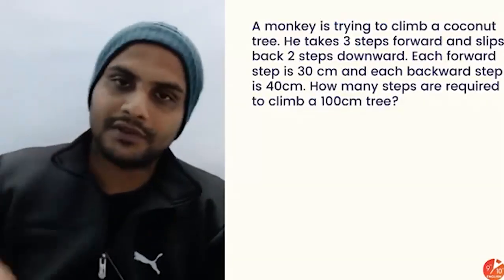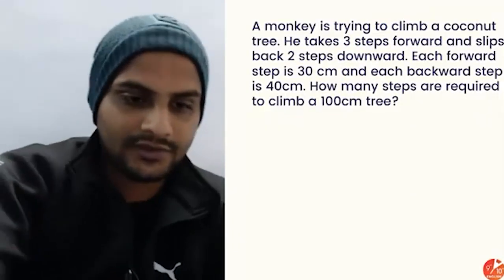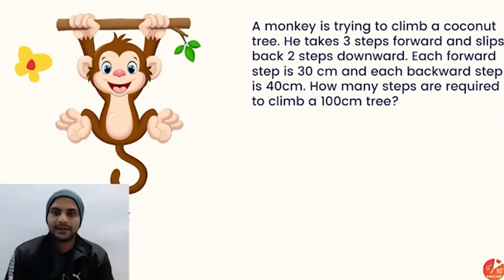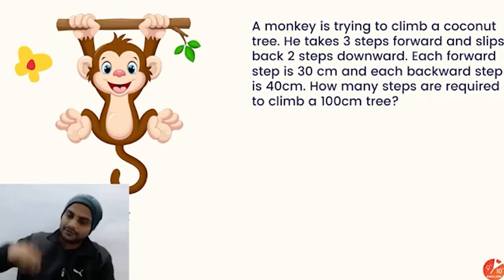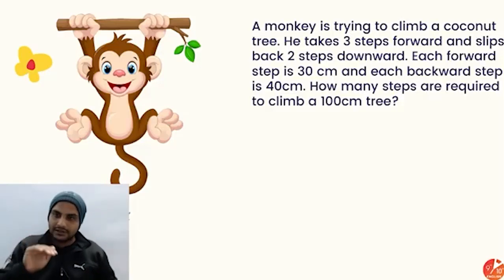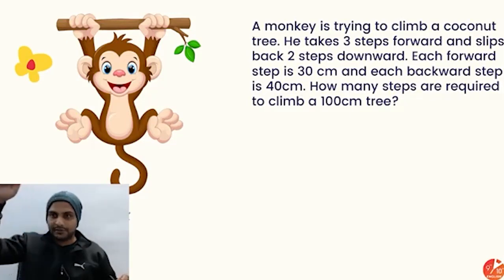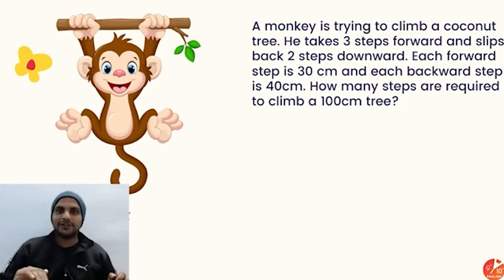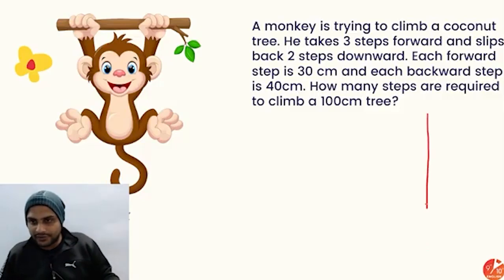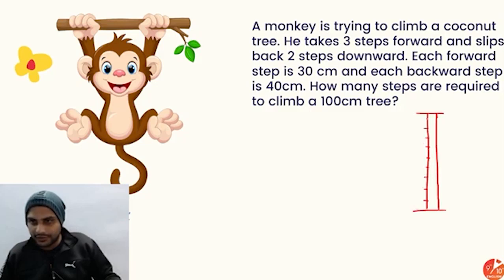Next puzzle: a monkey is trying to climb a coconut tree. He takes three steps forward and slips back two steps downward. Each forward step is 30 centimeters and each backward step is 40 centimeters. How many steps are required to climb a 100-centimeter tree? Imagine the tree marked at 10, 20, 30... up to 100 centimeters.